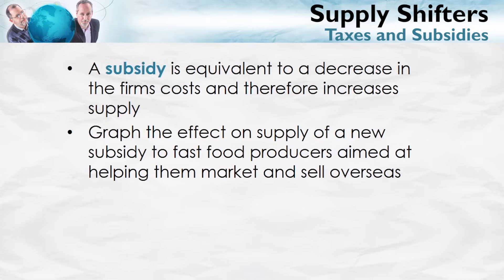What about a subsidy? A subsidy is just the opposite of a tax. Instead of the government taking with every unit you produce, the government gives some amount of money for every unit produced. A subsidy is equivalent to a decrease in the firm's costs, and therefore it increases supply. Go ahead and graph the effect on the supply curve of a subsidy to fast food producers — suppose it's aimed at helping them export overseas. A subsidy is just a tax in reverse.